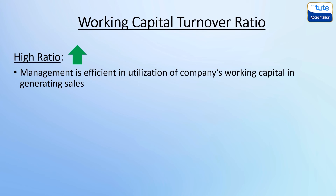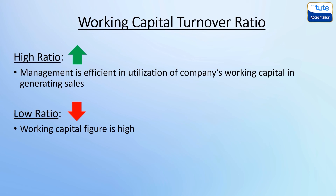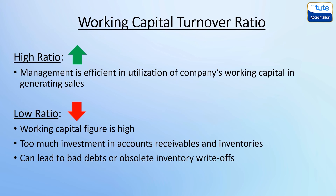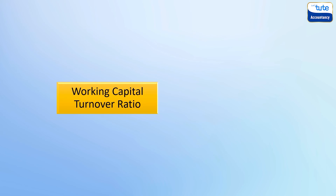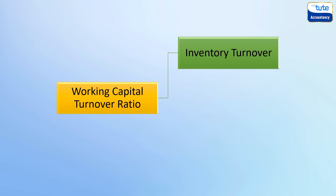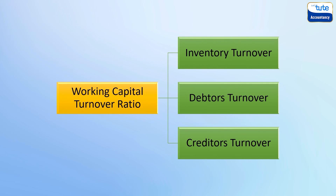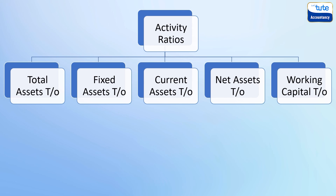A high ratio indicates that management is extremely efficient in utilizing the company's working capital to generate sales. A low ratio indicates that the working capital figure is higher and the business is investing too much in accounts receivables and inventories, which could eventually lead to excessive bad debts or obsolete inventory write-offs. Working capital turnover ratio is further segregated into inventory turnover, debtors' turnover, and creditors' turnover, which we shall discuss in the next session.